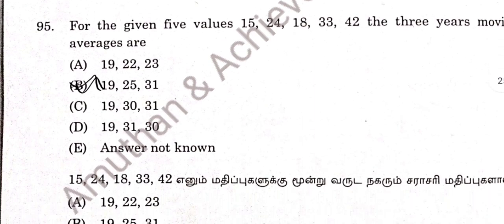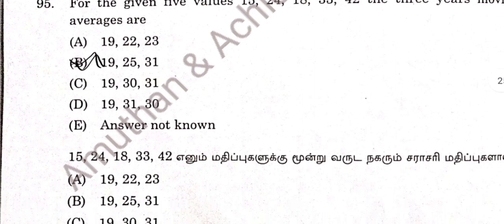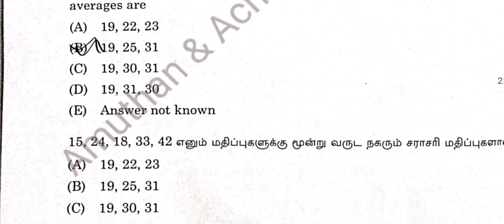Question 95: For the given 5 values, using 3-point moving averages, the values are 19, 25, and 31. Option B is correct answer.